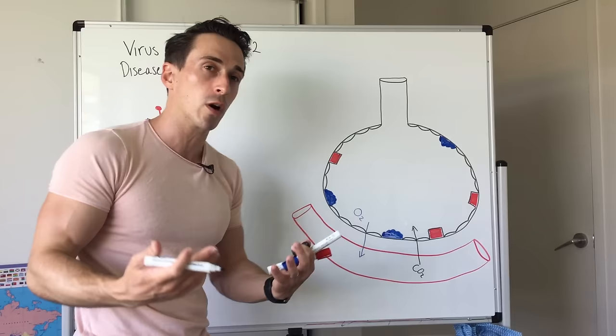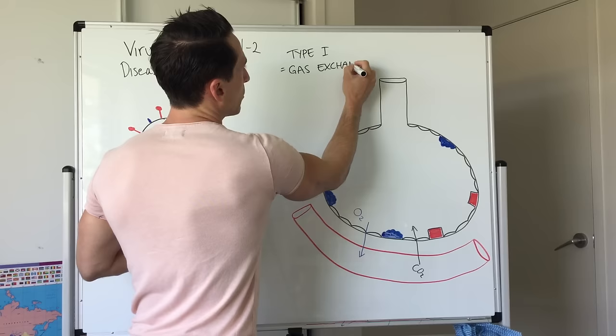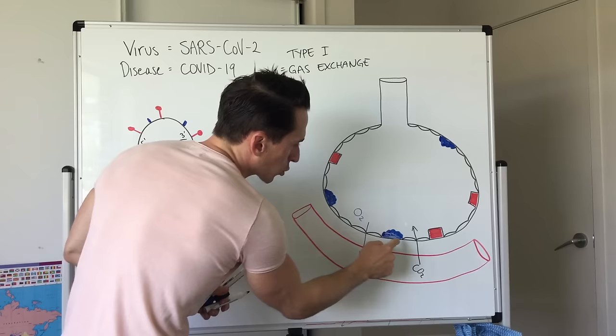The type 1 cell is there for gas exchange. What these cells are are simple squamous epithelia. That means there's a single layer of squish looking epithelial cells. They're simply there for that gas exchange to occur. That's all that they do.